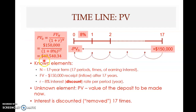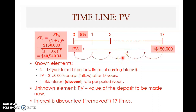So the present value is $40,540.34. You can turn this the other way around — if you have this much now and invest it at 8% for 17 years, you would get $150,000 at the end of 17 years. Present value is like the inverted future value problem.